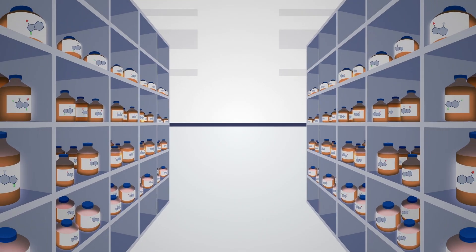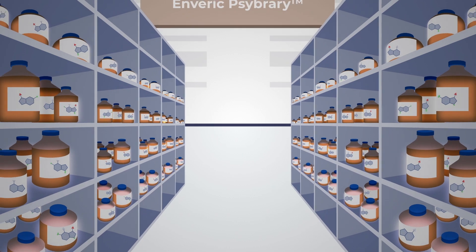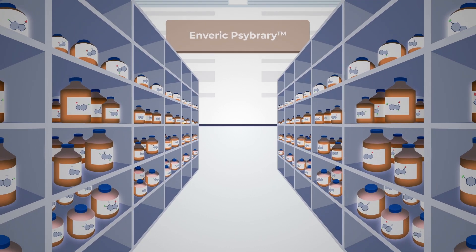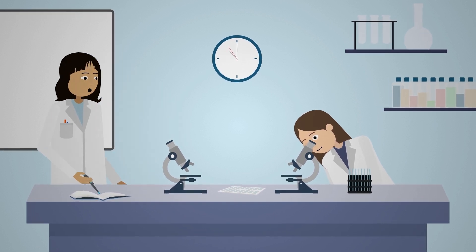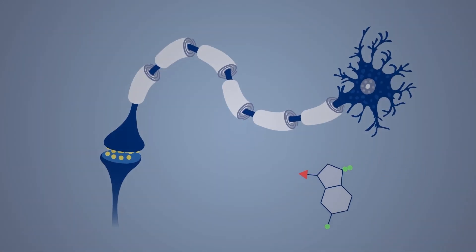This allows Enveric to add more drug candidates to the Cybrary with a larger amount of chemical diversity. That diversity is then tested pharmacologically to better understand what chemical modifications make the most promising drug candidates.